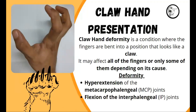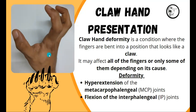Today's topic is claw hand presentation, or claw hand deformity, which is a condition where the fingers are bent into a position that looks like a claw. As you can clearly see in this diagram, the presentation involves hyperextension of the metacarpophalangeal joints and flexion of the interphalangeal joints. This is the typical presentation of claw hand deformity.